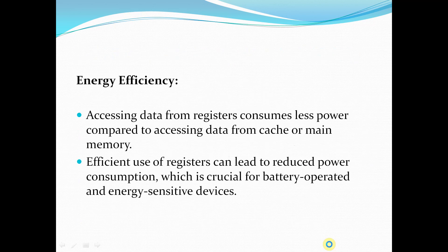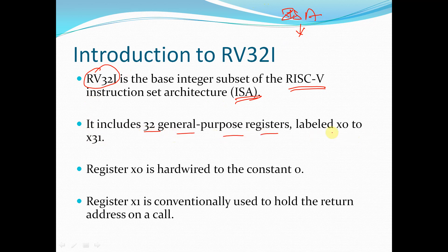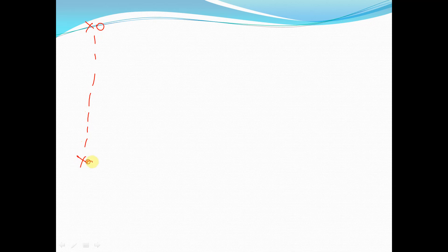RV32I, that is RISC-V 32I, is the base integer subset of the RISC-V instruction set architecture. This ISA includes 32 general purpose registers labeled from X0 to X31.